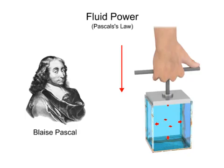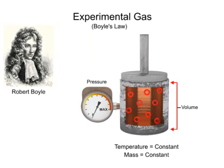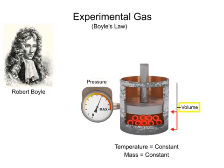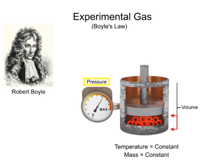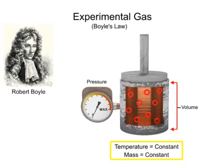Another important property of fluid mechanics was discovered in the late 1600s by Robert Boyle, an Irish physicist. Boyle's Law is an experimental gas law which describes how the pressure of a gas increases as the volume of gas decreases. A modern statement of Boyle's Law is that the absolute pressure of a confined body of gas varies inversely as its volume, provided its temperature remains constant.